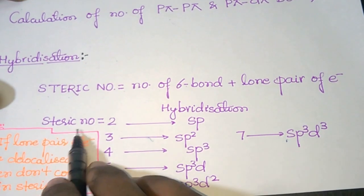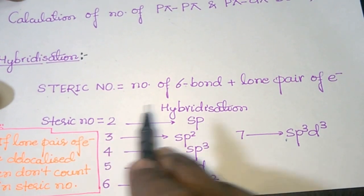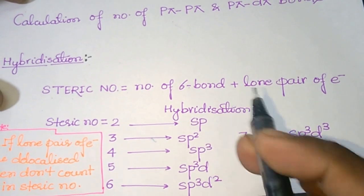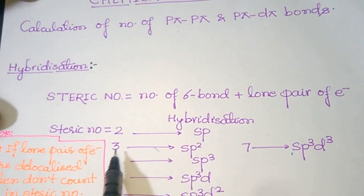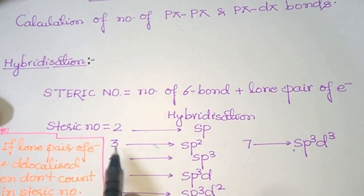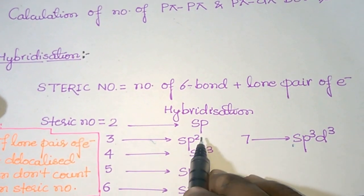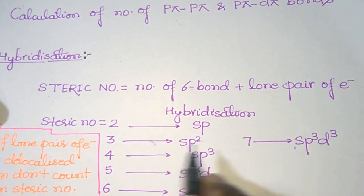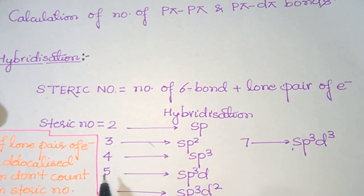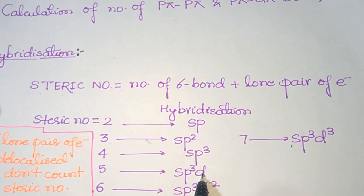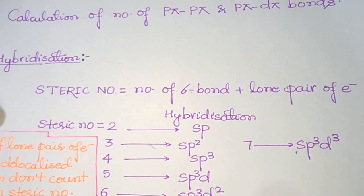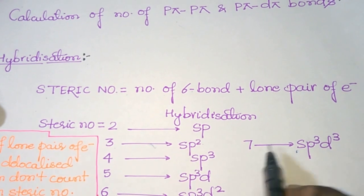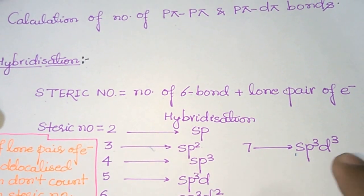If the steric number is 2, then the hybridization is sp. If the steric number is 3, then hybridization is sp2. If it is 4 then sp3, 5 then sp3d, 6 then sp3d2, and 7 then sp3d3.